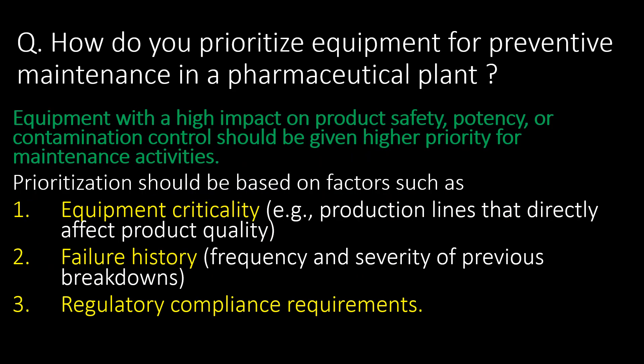How do you prioritize equipment for preventive maintenance in a pharmaceutical plant? Equipment with a high impact on product safety, potency, or contamination control should be given higher priority. Prioritization should be based on equipment criticality (e.g., production lines that directly affect product quality), failure history (frequency and severity of previous breakdowns), and regulatory compliance requirements.